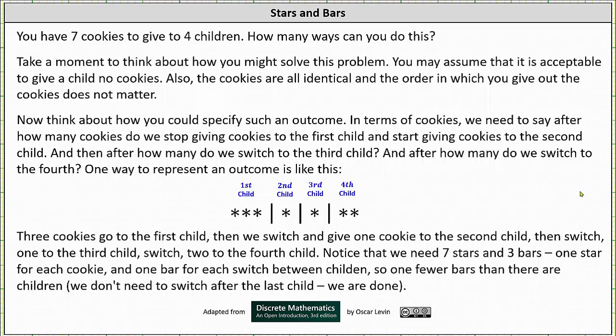Welcome to an introductory lesson on the stars and bars method of counting. Let's begin by considering a question. You have seven cookies to give to four children. How many ways can you do this?